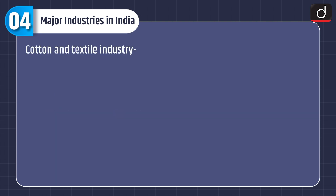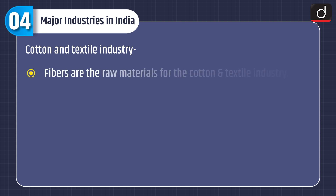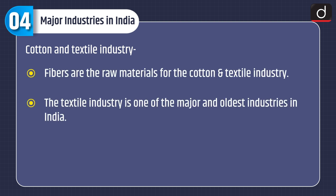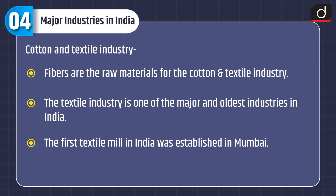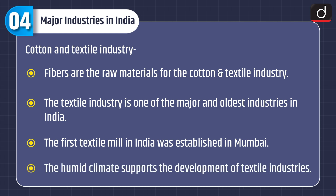Cotton and textile industry: Fibers are the raw materials for the cotton and textile industry. The textile industry is one of the major and oldest industries in India. The first textile mill in India was established in Mumbai, and the humid climate supports the development of textile industries.